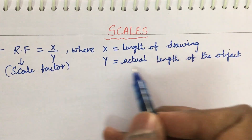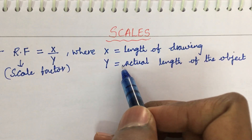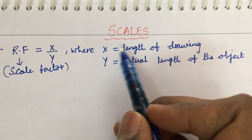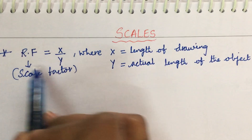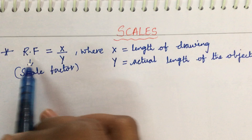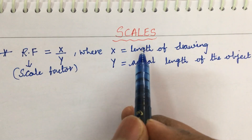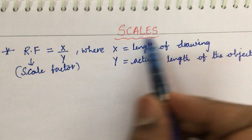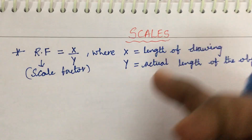When x and y are given, identify which one is x and which one is y, substitute into the formula, and calculate. Sometimes the RF is given directly, like 1:100 or 1:200, so there is no need to calculate it.